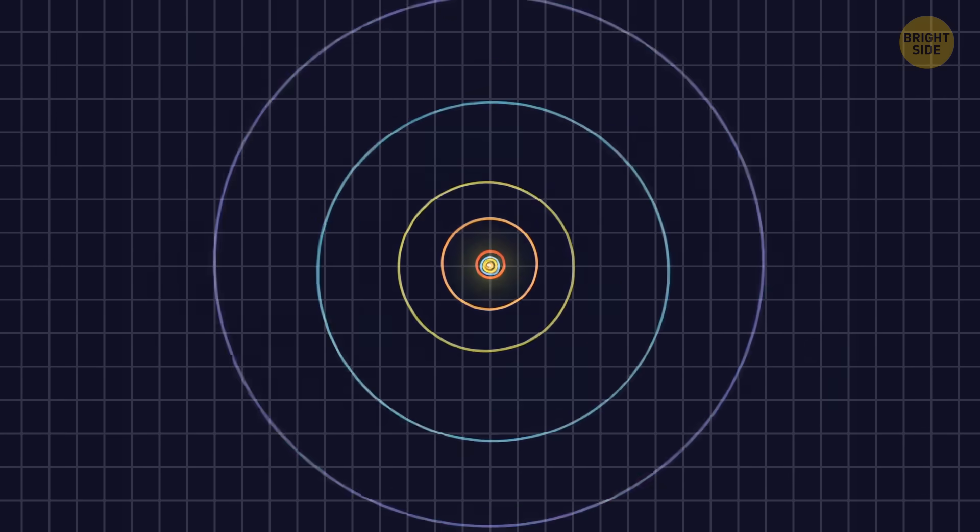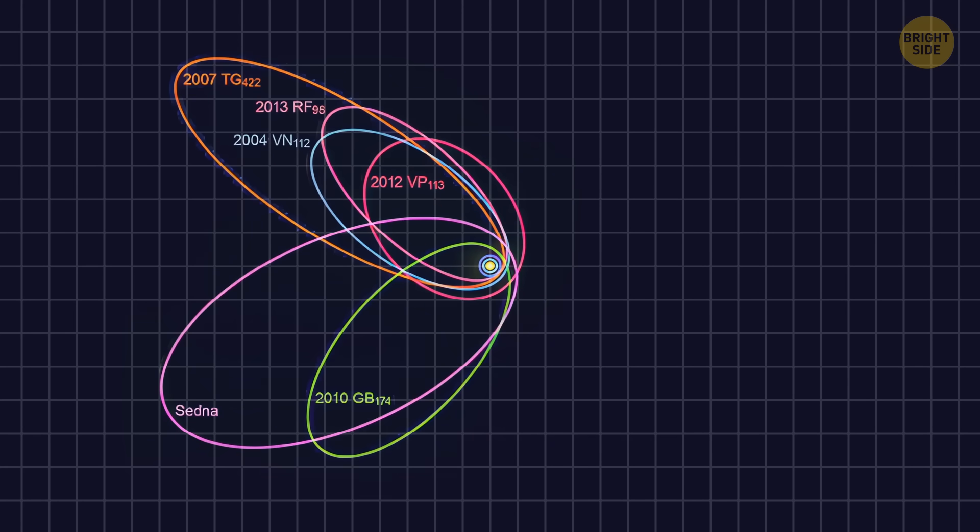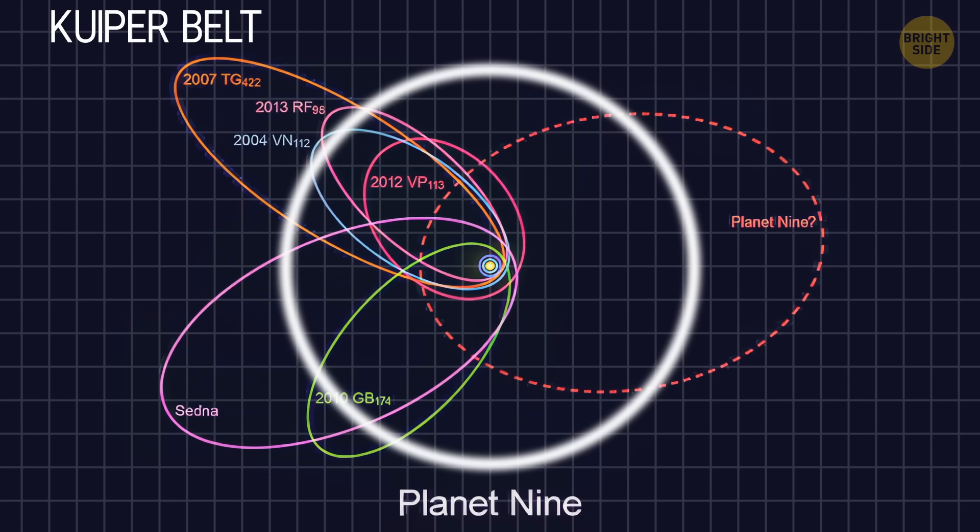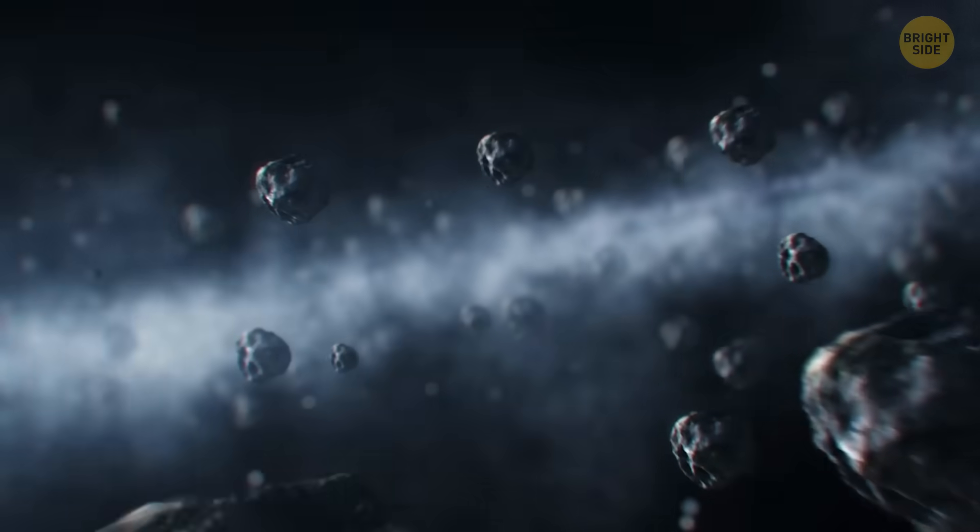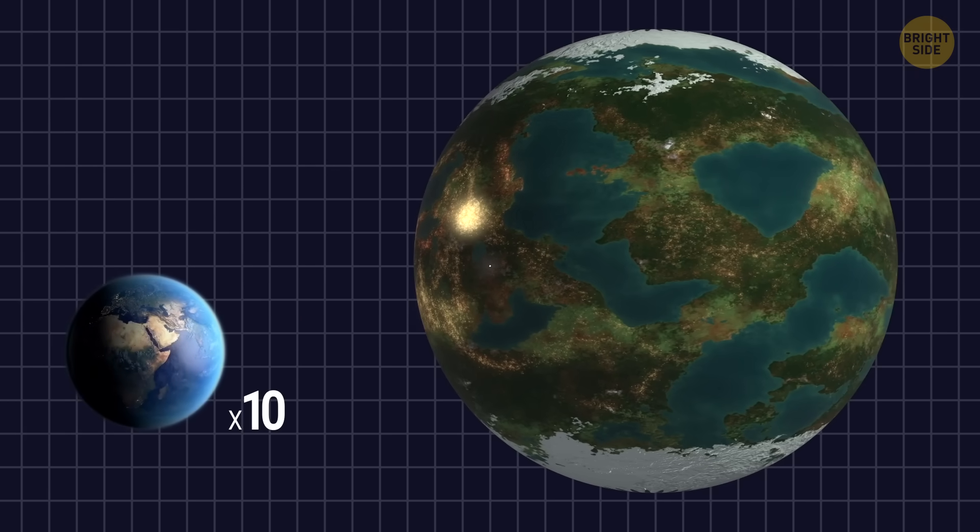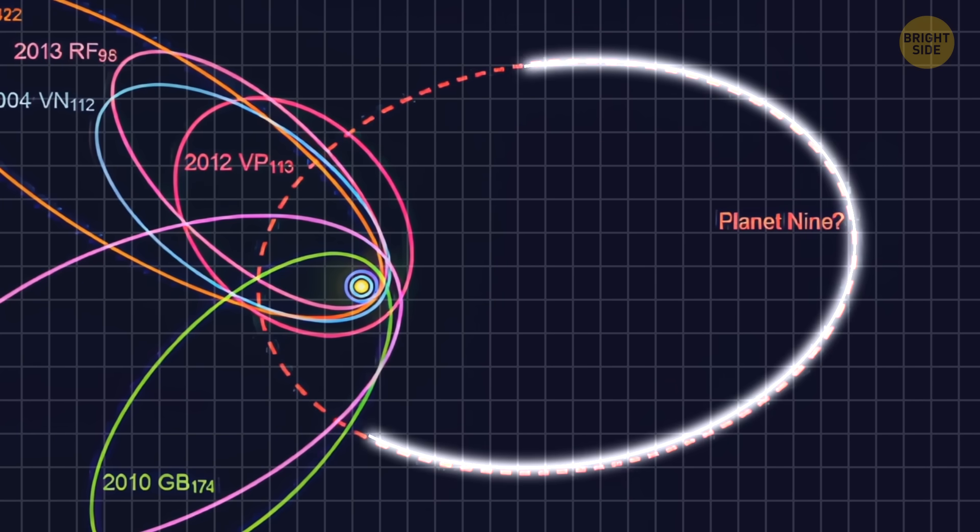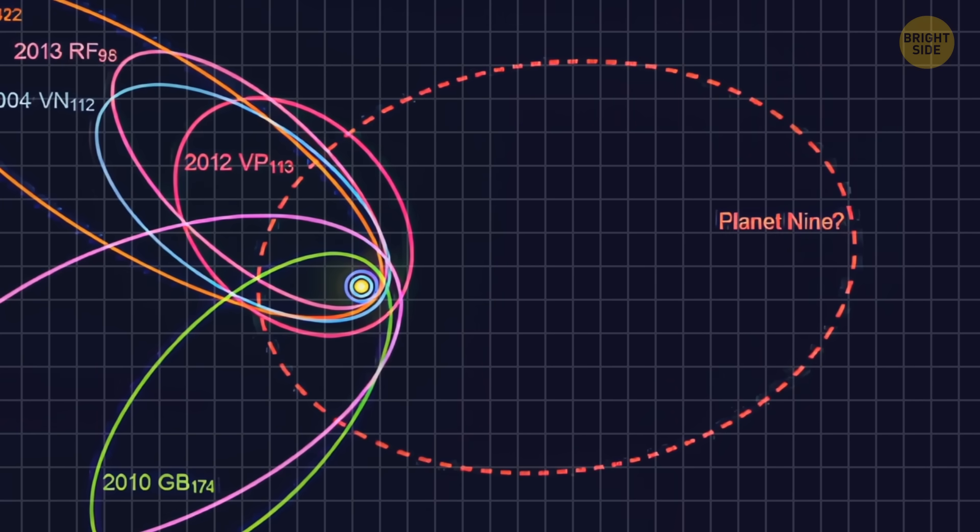Its existence could also explain the unusual paths of smaller objects in the distant Kuiper Belt, a region full of icy debris that stretches far beyond Neptune's orbit. Back in 2016, researchers from Caltech published a study about Planet 9. They suggested it could have a mass about 10 times that of Earth and follow a highly elongated path. That's a scientific way of saying it takes forever to make one trip around the Sun.